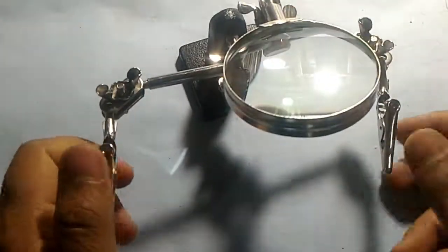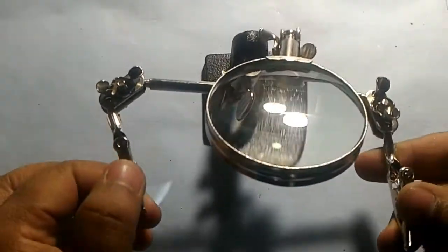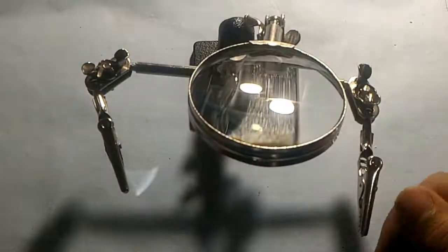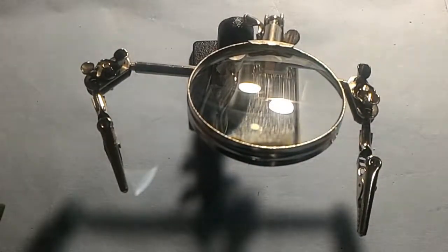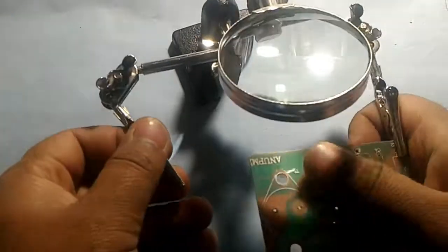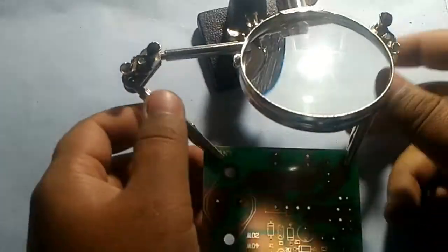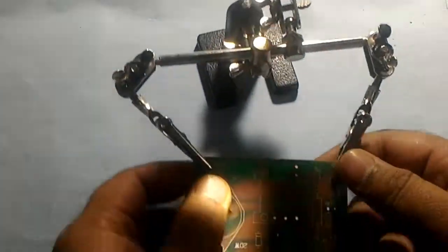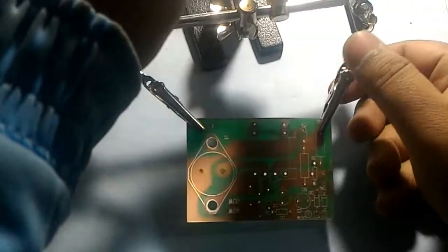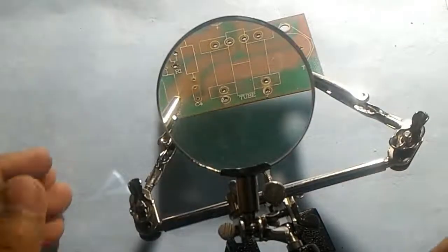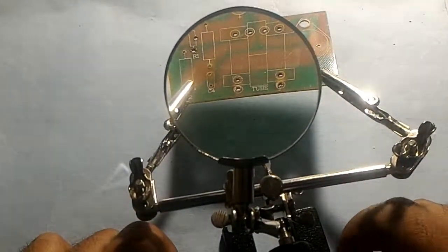So here we have third hand for electronics engineers and you must be asking what does it do. So while soldering or desoldering as in previous video in which I was desoldering components from the board, it was slipping around and it was too hard to do that but this thing makes it a lot easier. Now just hold it right. It will hold it right there. You can put the magnifying glass on it and it will be easier to solder or desolder.